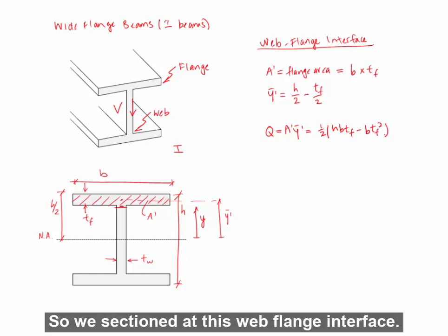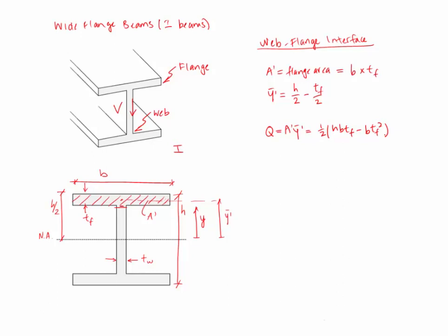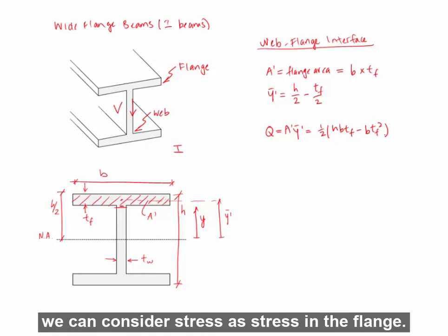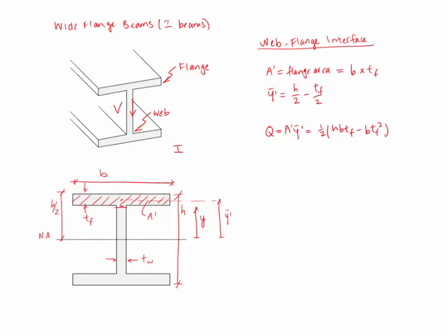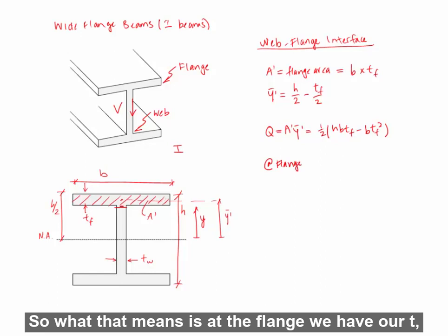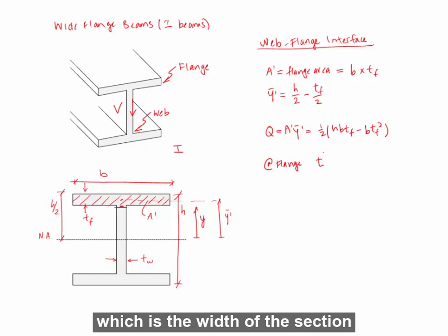So we sectioned at this web flange interface. Just above this interface, we can consider stress as stress in the flange. So the width of the cross section in the flange is the width of the flange. So what that means is, at the flange, we have our T, which is the width of the section at the point we're looking at, is equal to the width of the flange. And our tau is then VQ over IB.